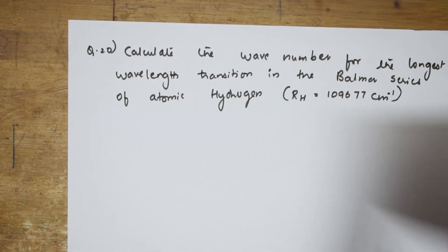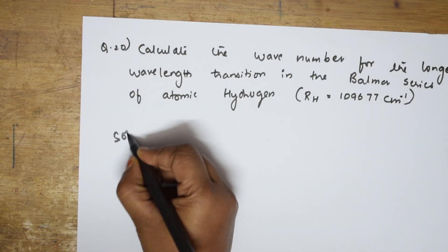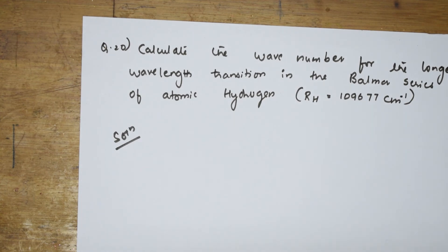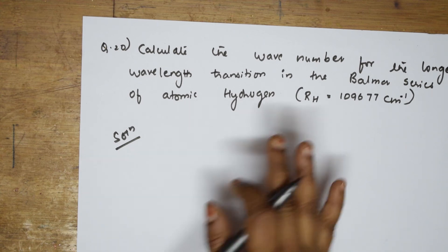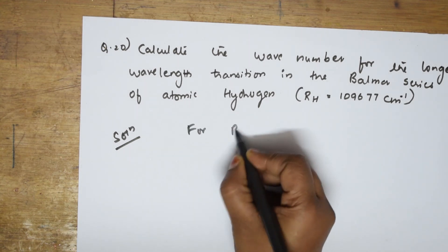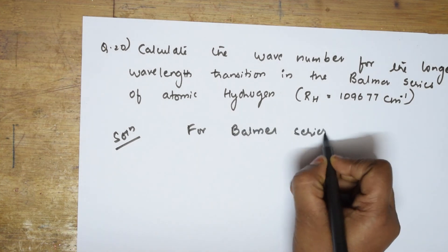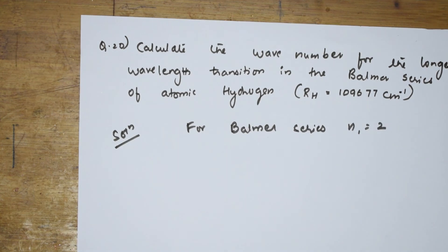Now the 20th numerical. Calculate the wave number of the longest wavelength transition in the Balmer series of atomic hydrogen. I need to calculate the wave number. For Balmer series, N1 = 2. Recall: for Lyman series N1 = 1; for Balmer, N1 = 2. For the longest wavelength transition, the energy is lowest, which means N2 = 3.